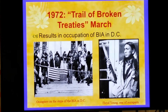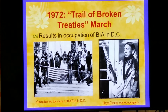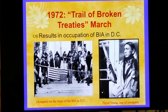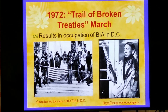The Trail of Broken Treaties March was a large-scale march all the way into Washington, D.C., to the Bureau of Indian Affairs building, which they eventually occupied — armed — to protest all 370 different broken treaties. This was met with a lot of fear because people were armed and had taken over a building. Eventually, though peacefully, they left the building.